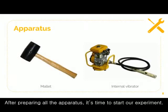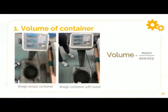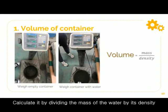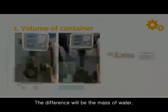After all the apparatus are prepared, it's time to start our experiment. First, we need to know the volume of the container — calculate it by dividing the mass of the water by its density. Do this by weighing the empty container and weighing it again after fully filling it with water. The difference will be the mass of water.